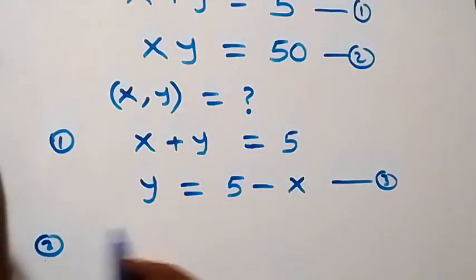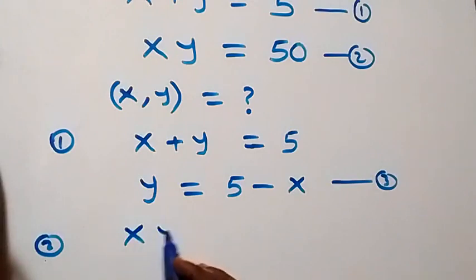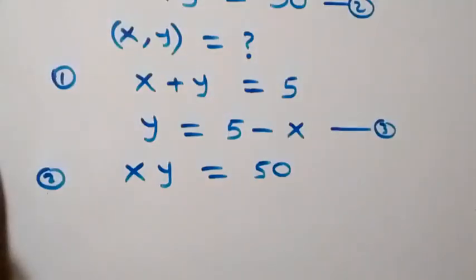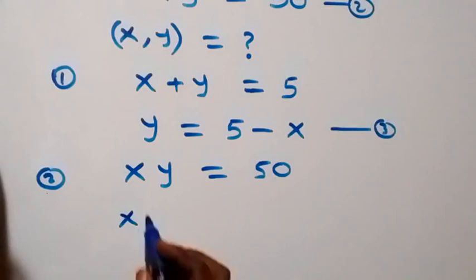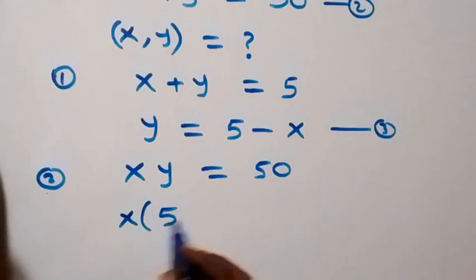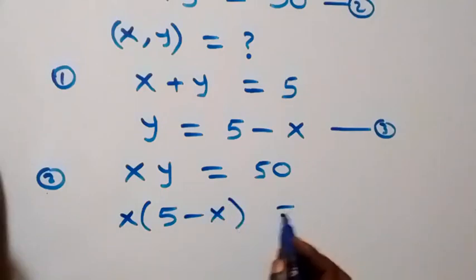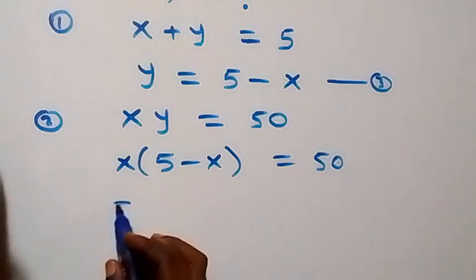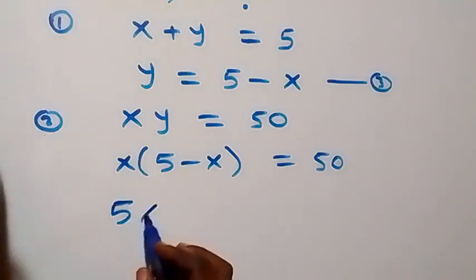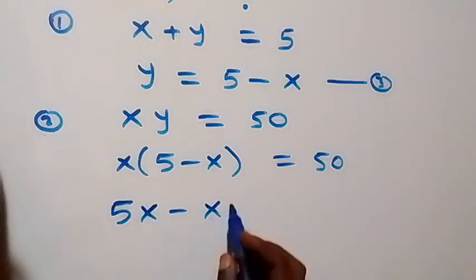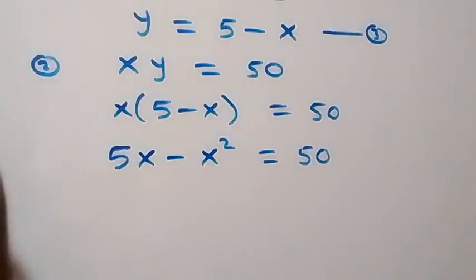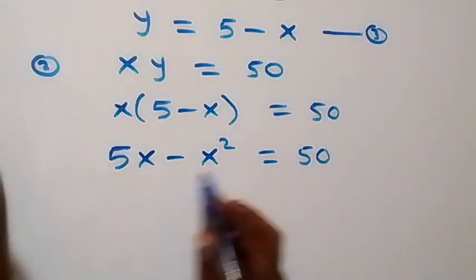Then substitute equation three into equation two. Equation two is x times y equals 50, which then becomes x times (five minus x) equals 50. Opening this bracket, this becomes five x minus x squared equals 50.